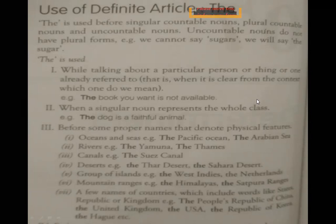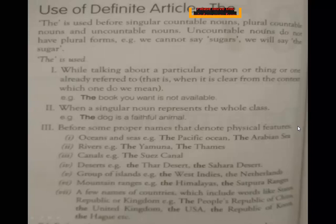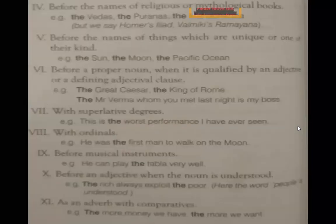THE is used before proper names that denote physical features: oceans and seas, rivers like the Yamuna, canals like the Suez, deserts like the Thar, groups of islands like the West Indies, the Netherlands. THE is used before names of religions and mythological books like the Vedas and the Puranas. THE is also used before things which are unique — one of their kind — like the sun, the moon, the Pacific Ocean.